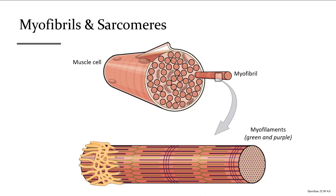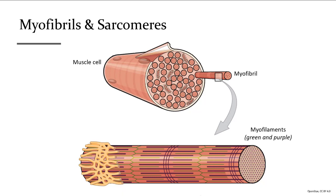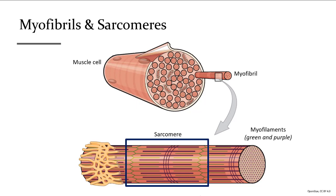Looking at a single myofibril, we can see colored patterns and stripes made by the dark and light myofilaments. Myofilaments are organized into repeating units called sarcomeres, going from one green zigzag Z-line to the next. Looking back at the muscle cell, the faint dark and light strips are made from sarcomeres lined up in a row like train cars.